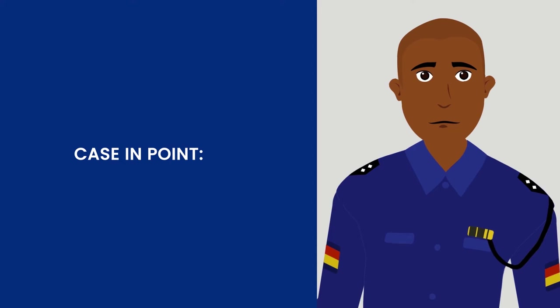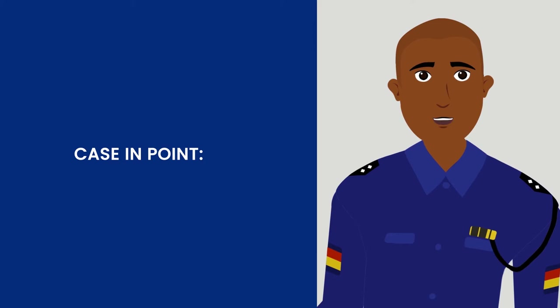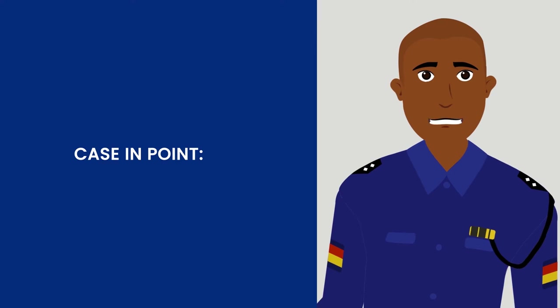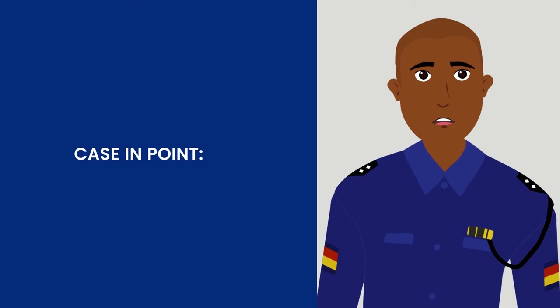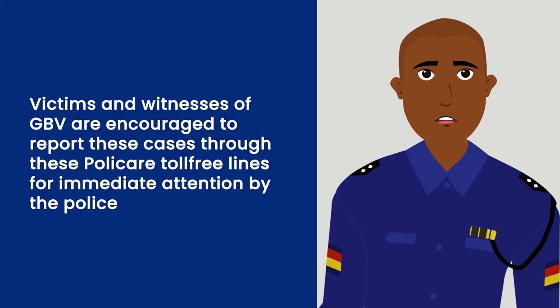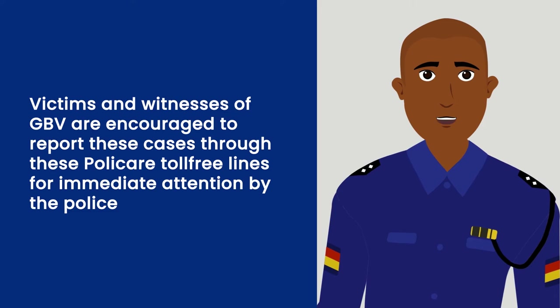Case in point: Kate, seven years of age, was home alone one day when her father defiled her, causing serious damage to her genitalia. Her mother returned from the market to find her daughter bleeding and crying. Her parents took her to a hospital 64 kilometers away, as opposed to the one nearest to their home, in an effort to conceal the crime. They were later arrested, charged and convicted according to the laws of Kenya. Victims and witnesses of gender-based violence are encouraged to report these cases through Polycare toll-free lines for immediate attention by the police.